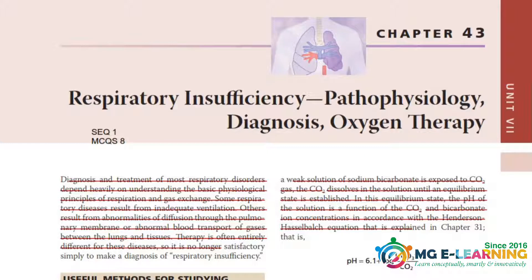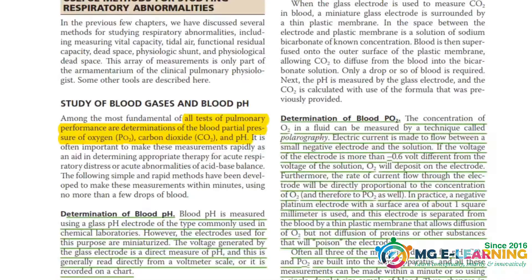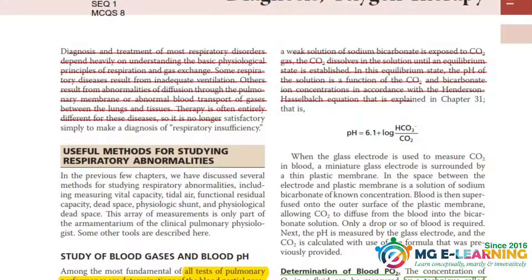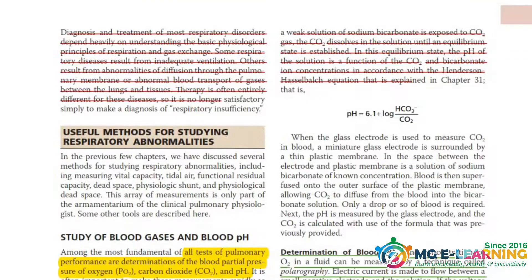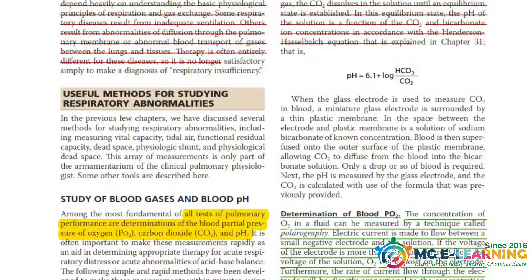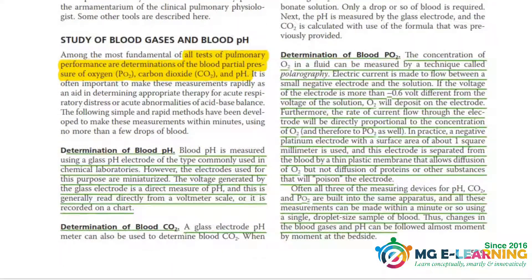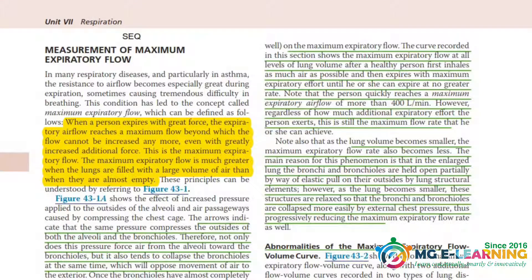The starting passage is not really important — you can skip all of that. Then useful methods for studying the respiratory abnormality: again, this is not a very high-yield topic, you just have to give it a read for better understanding. Next is the measurement of maximum expiratory flow.